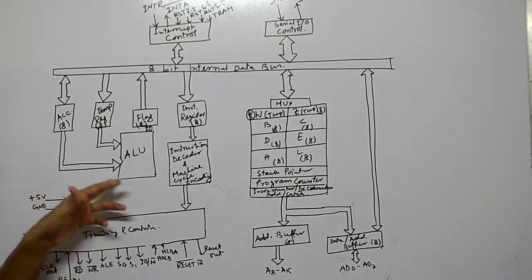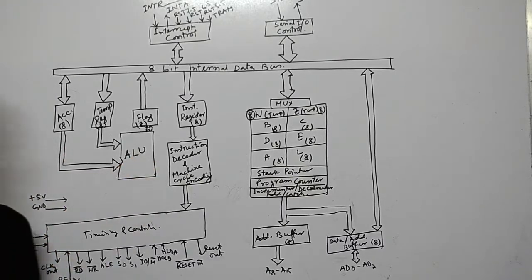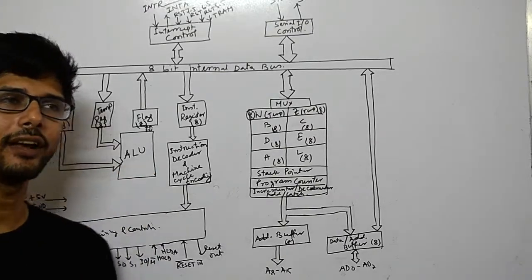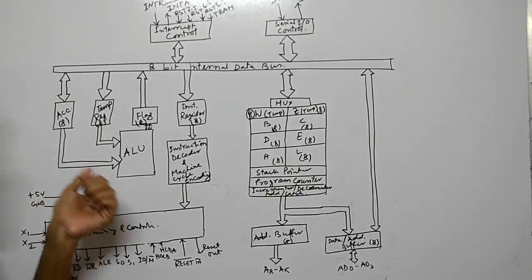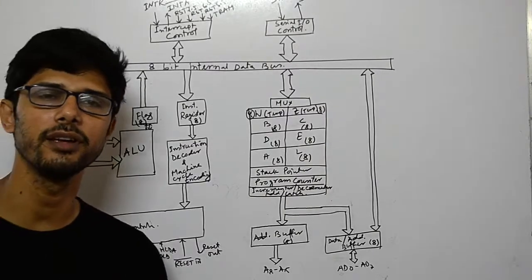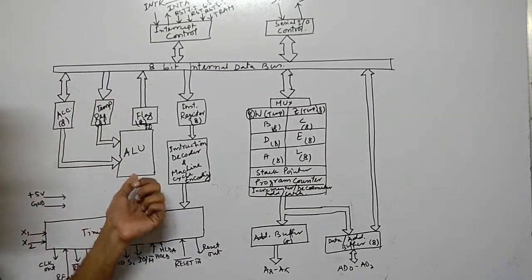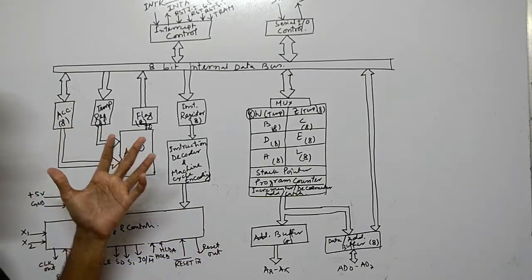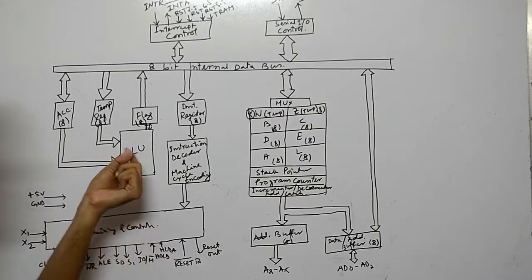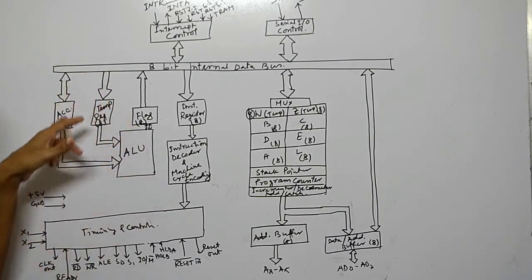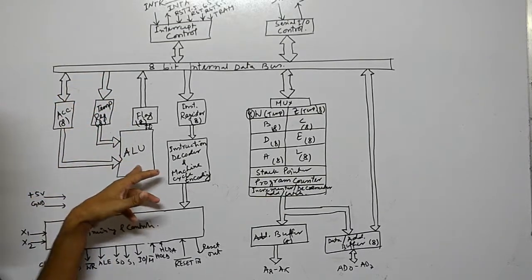All memory-related operations go to the ALU — arithmetic and logic unit. The ALU performs arithmetic operations like addition, subtraction, multiplication, and division, and logical operations like AND, OR, NOT, and XOR. Before entering the ALU, all data comes to the accumulator first, then passes to the ALU.